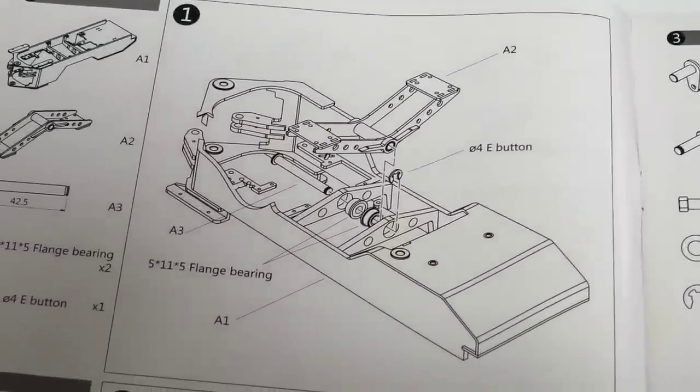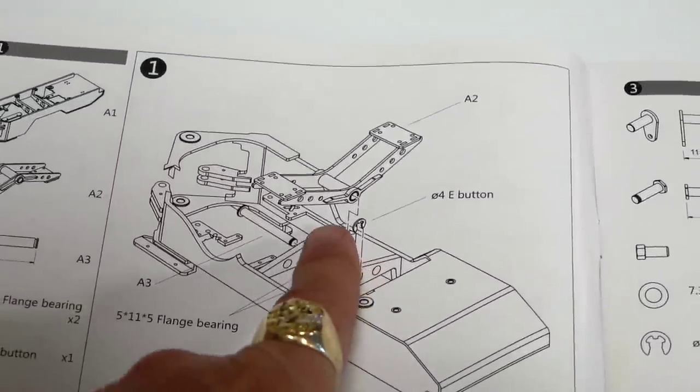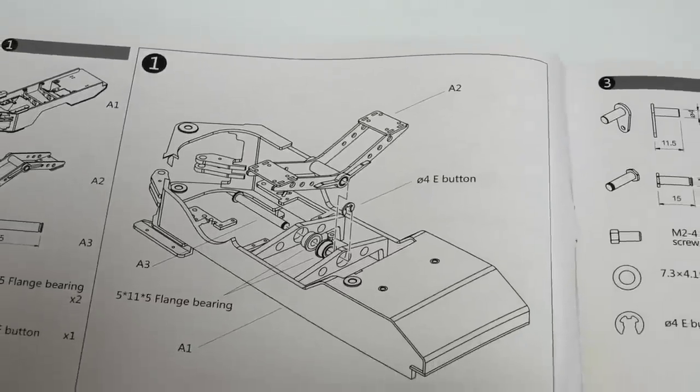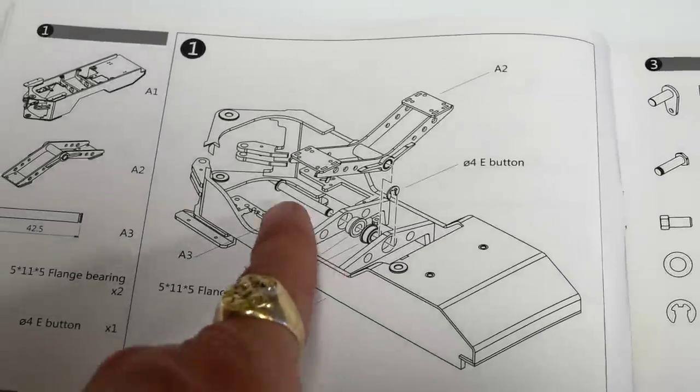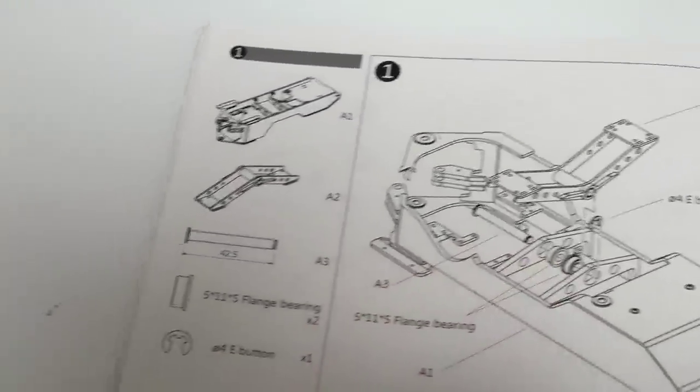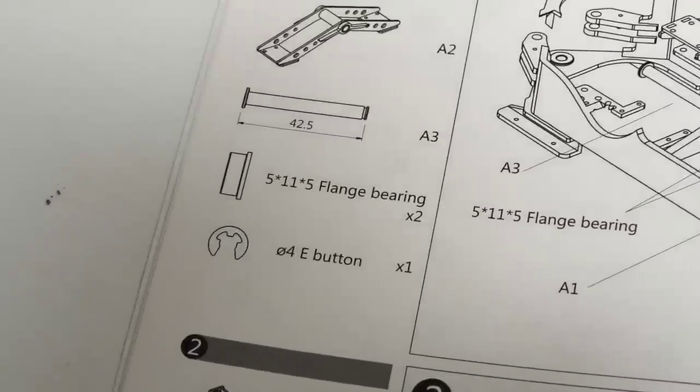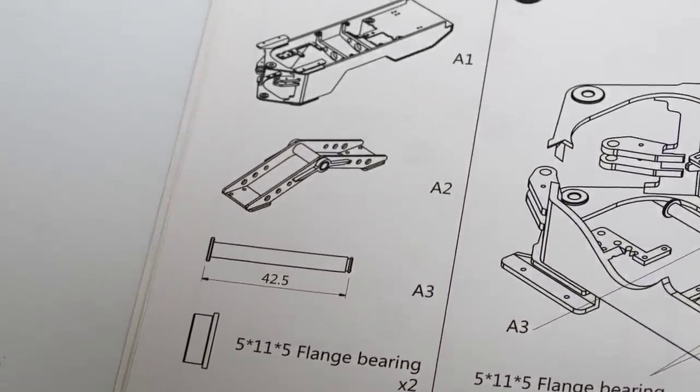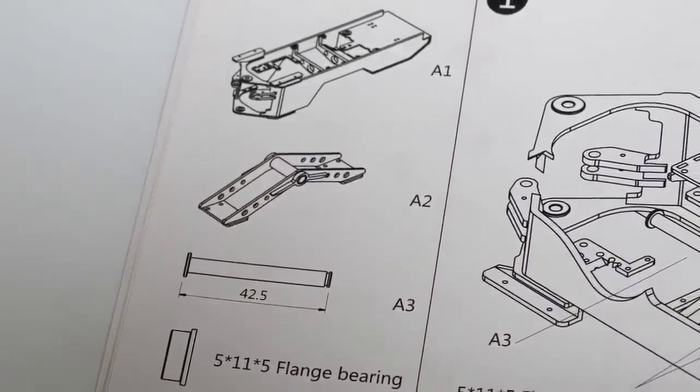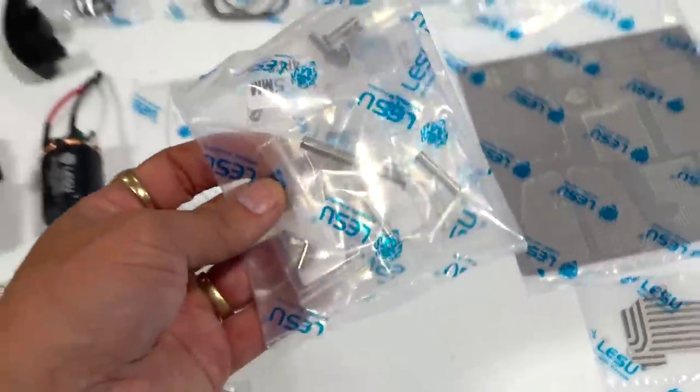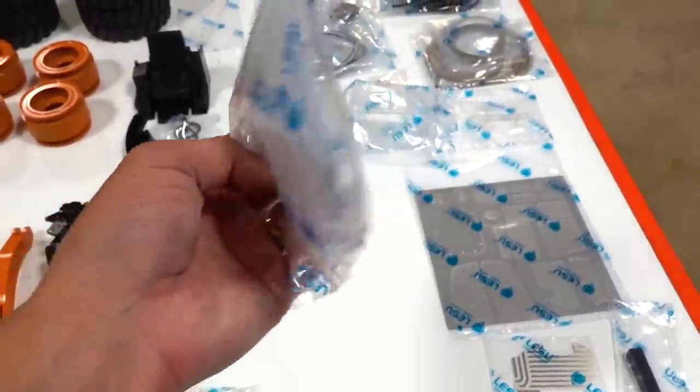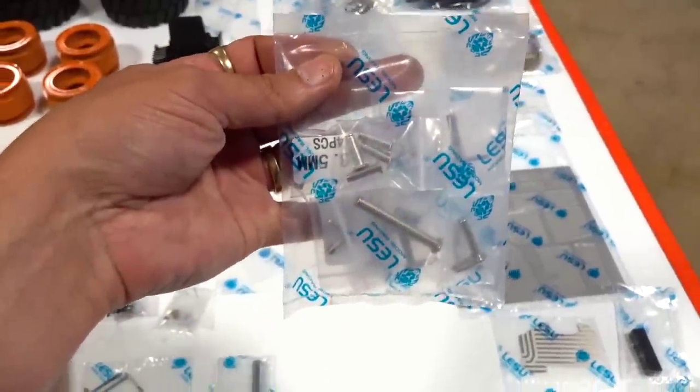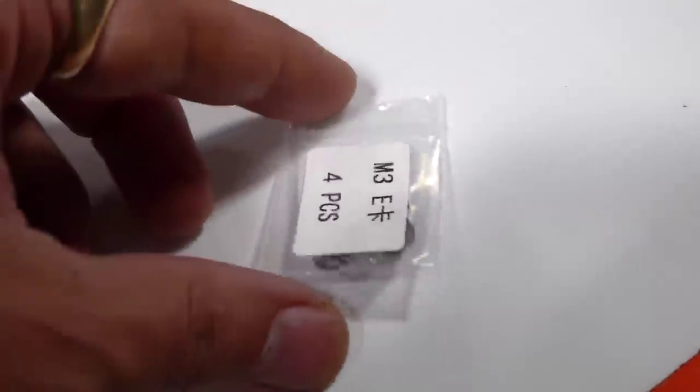So page one, step one. Take bracket A2, that's gonna be for the rocker for the wheels, and then the bearings and the pin. And an E clip, so one of those, two of the flange bearings, and then one pin that's 42.5. Well there's the flange bearings that's easy. There's a whole bunch of pins in this bag.